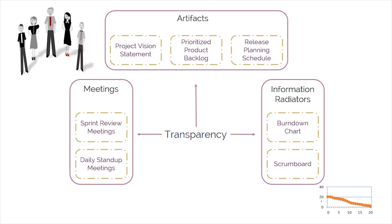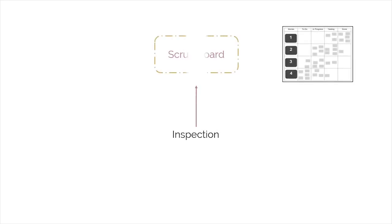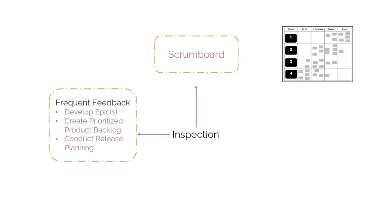The next characteristic of Empirical Process Control is inspection. Scrum provides a point of inspection with the use of a common Scrum board and other information radiators, which show the progress of the Scrum team on completing the tasks in the current sprint. The collection of feedback from the customer and other stakeholders during the Develop Epics, Create Prioritized Product Backlog, and Conduct Release Planning processes give additional opportunities for inspection.